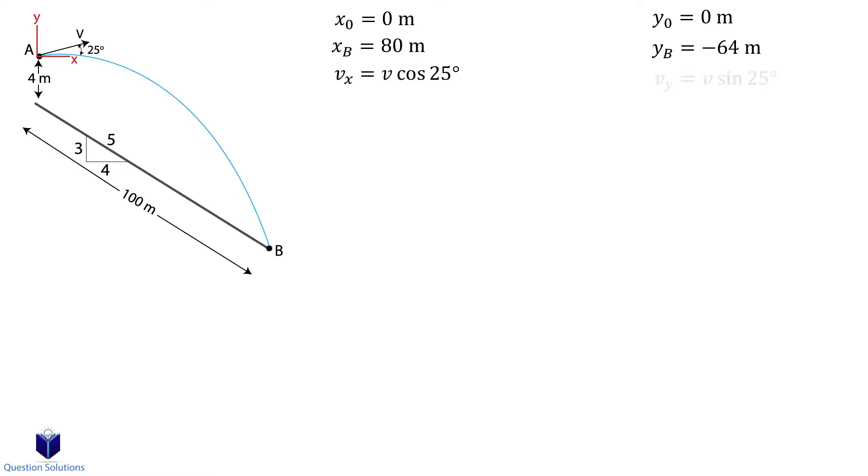The velocity is V sin 25 degrees. Acceleration also affects the skier, so we have negative 9.81 meters per second squared.